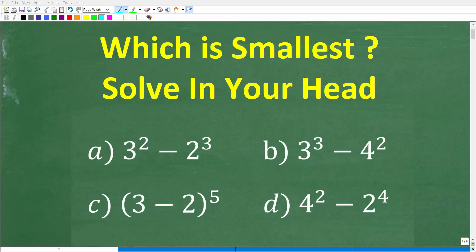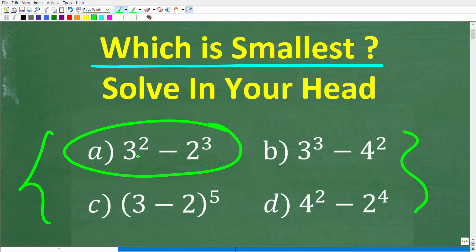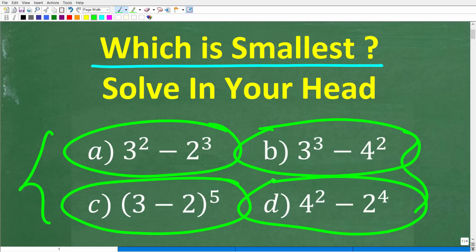Okay, so put away your calculator, your pencil and paper, and let's see if you can solve this simple math problem all in your head. So what is the problem? Well, we're trying to determine which is the smallest value out of these numeric expressions. So let's take a look at our options. A is 3 squared minus 2 to the third power. B is 3 cubed minus 4 squared. C is 3 minus 2 in parentheses to the fifth power. And D is 4 squared minus 2 to the fourth.